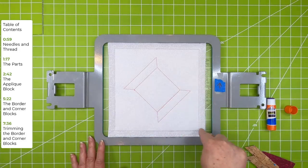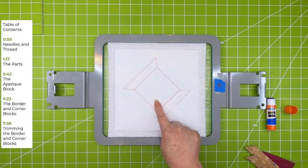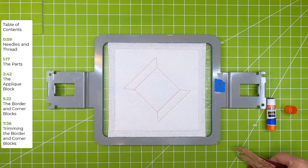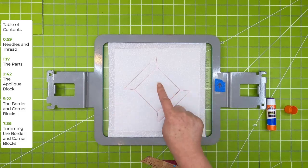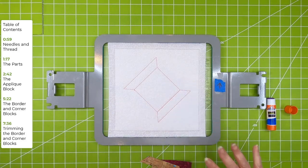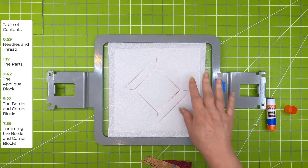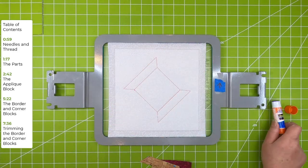I've stitched color number one, which is the basting border, and color number two. This is the placement for my applique parts. Normally I would be stitching both of these in the same color as my background, but so that it's easier to see on the screen, I've done them in the colors of the design.